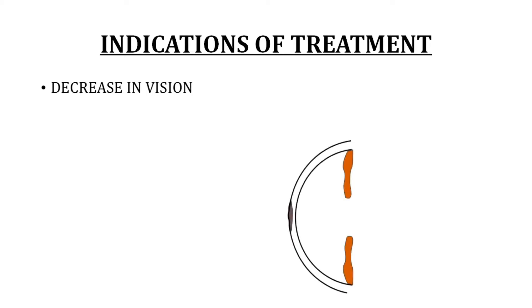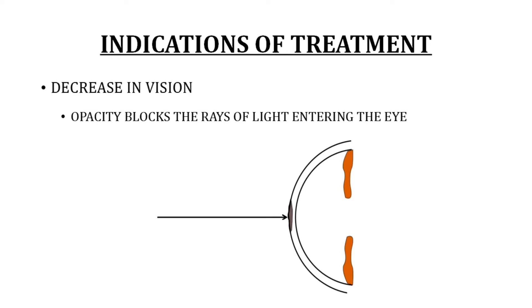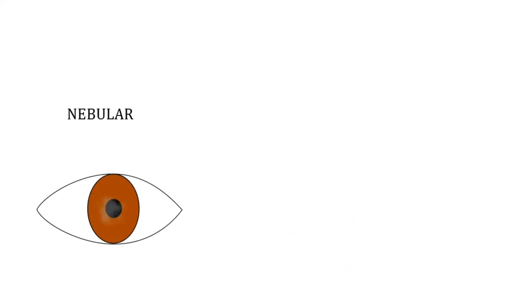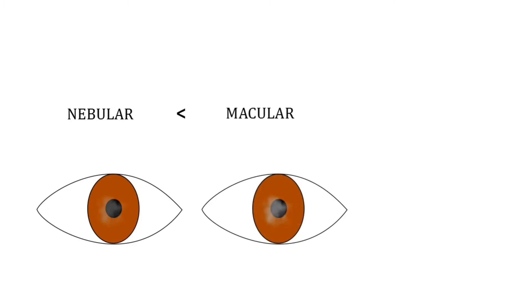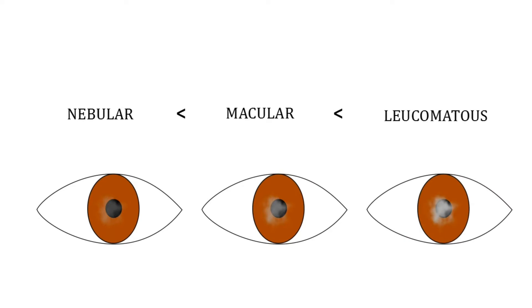We will start with the indications of treatment. Treatment of an opacity depends on the symptoms experienced by the patient. The most common symptom of a corneal opacity that brings the patient to an ophthalmologist is decrease in vision. If an opacity is present in the visual axis, it will block the rays of light entering the eye. The decrease in vision depends on the density of the opacity. A central nebular opacity causes less diminution of vision compared to a macular opacity, while a central leucomatous corneal opacity would affect vision the most.